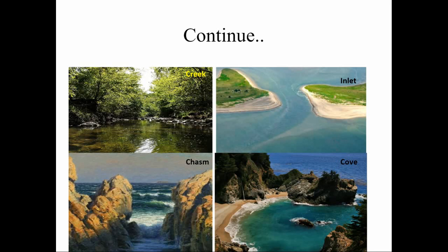Here you can see a creek — a seawater channel. This is the inlet — a small narrow valley. Here is the chasm, which is also a result of headward erosion of a cliff where water enters and high cliffs are present on both sides. The cove is a small bay connected by a small channel to the sea.